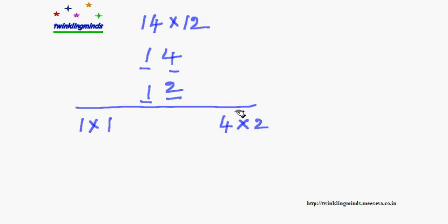Then we need to multiply crosswise and add the result. So multiply 1 with 2 and multiply 4 with 1, and add these two. If you multiply 1 with 1, it is 1. If you multiply 4 with 2, it is 8.